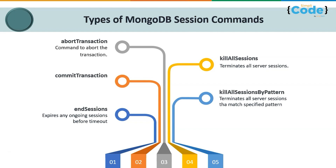There are typically five session commands in MongoDB. First, the abort transaction command is used to stop or terminate an ongoing transaction. Next, the commit transaction command is used to permanently save all transactions in the MongoDB database. Then, the end sessions command expires any ongoing sessions before the timeout. MongoDB has a default timeout period of 30 minutes, after which it automatically ends the session.